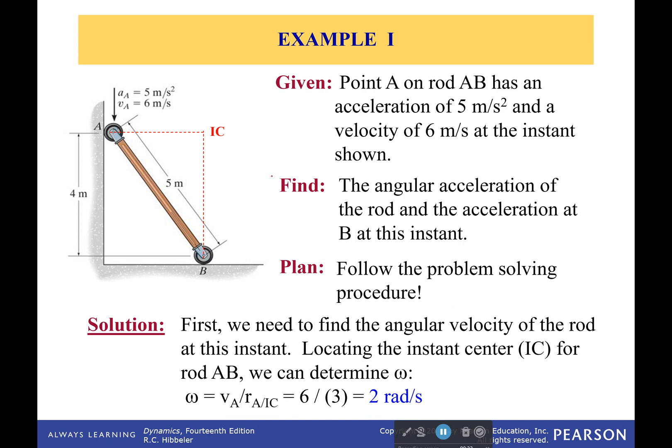Well, we use our instantaneous center of zero velocity. We know this velocity is going down, this one is going to the right, we drag our lines up and over, and we have a nice little triangle. If this one is 4, then that one is 3, it's just a nice little 3, 4, 5 triangle.